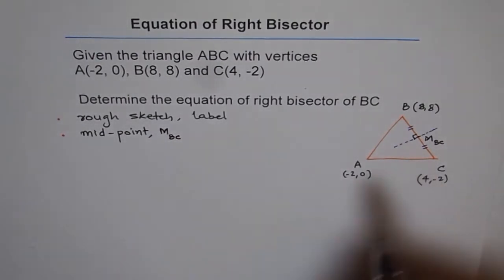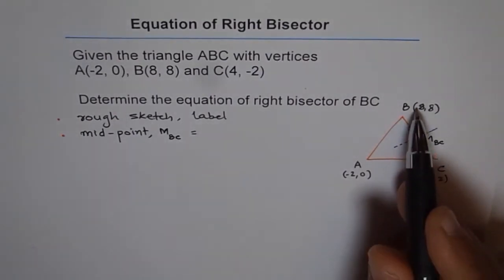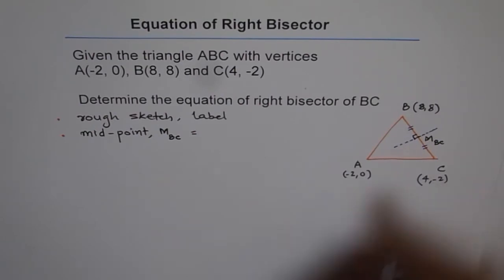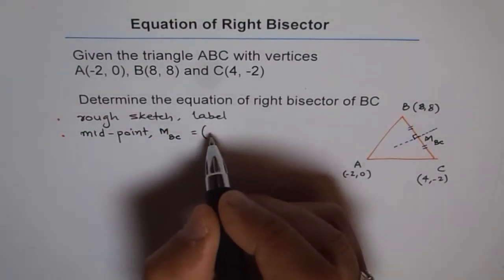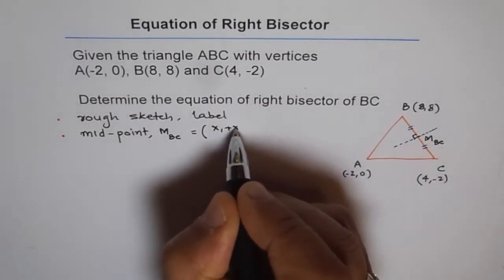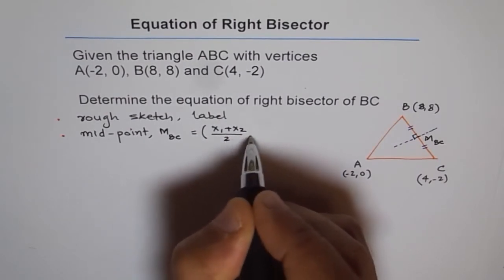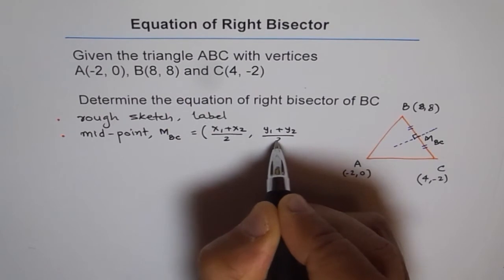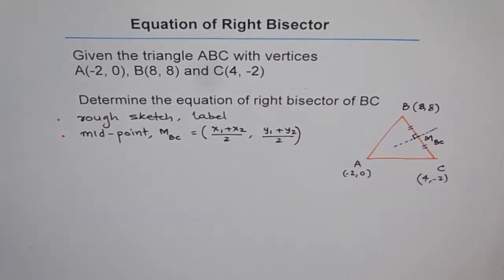Midpoint is how do you calculate midpoint? The formula for midpoint is add x values divide by 2, add y values divide by 2. So midpoint formula is (x1+x2)/2 and (y1+y2)/2. That is how we get midpoint.